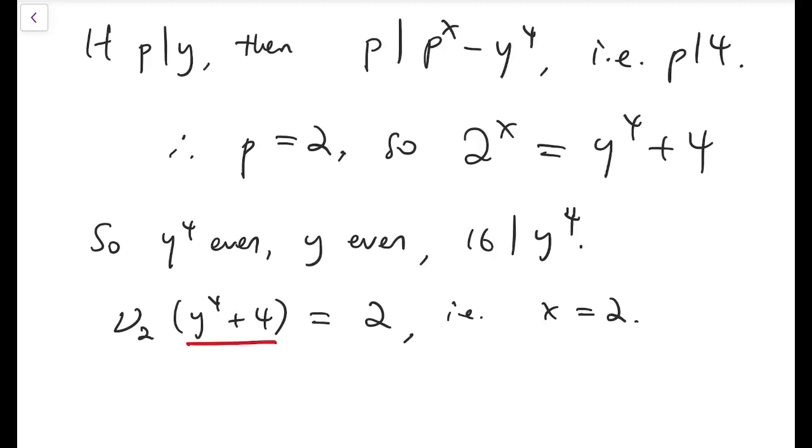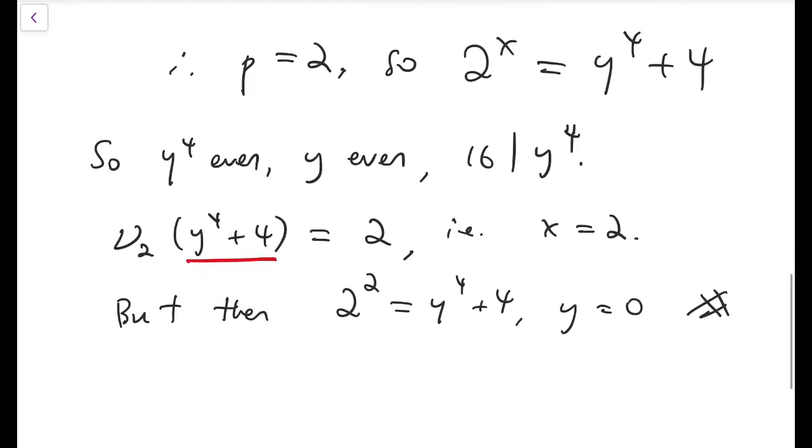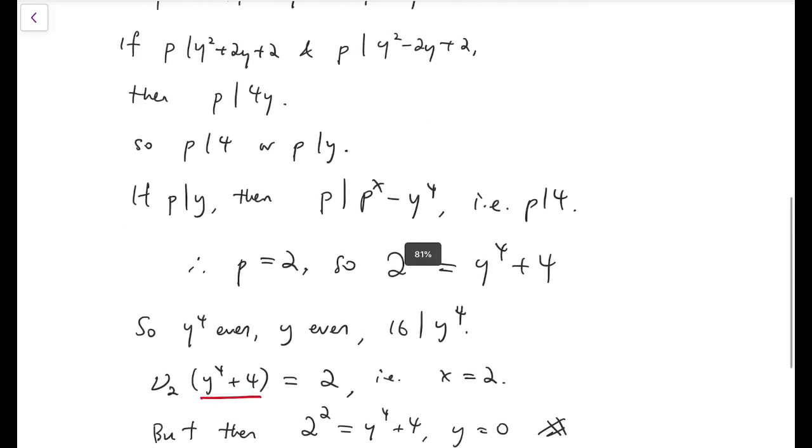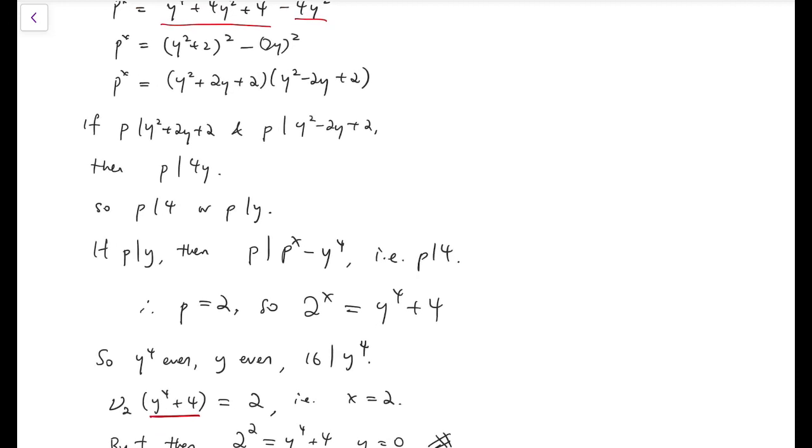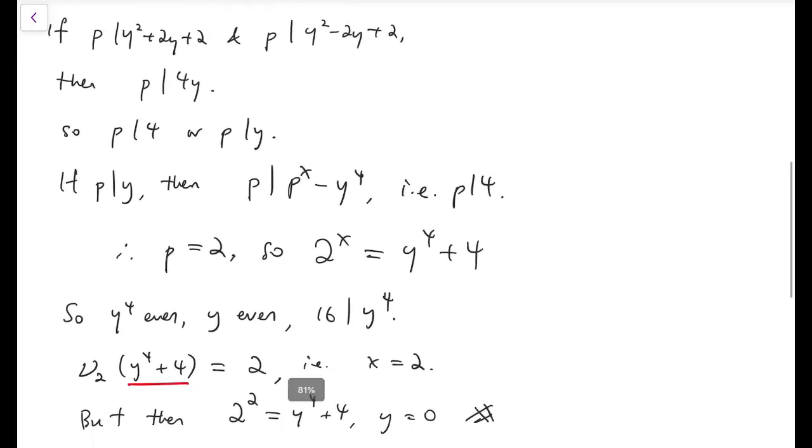But that's not possible, right? Because 2 to the 2 equals y to the 4 plus 4, and y is 0, which is wrong. Y is a natural number, so y has to start from 1. So now, this case will not hold. That means we cannot have both polynomials, y squared plus 2y plus 2, or minus 2y plus 2, to be a power of p, or to be divisible by p. So one of them must be 1.